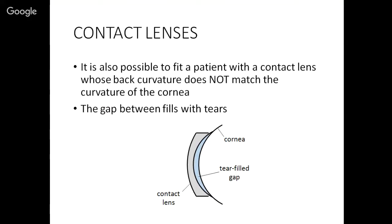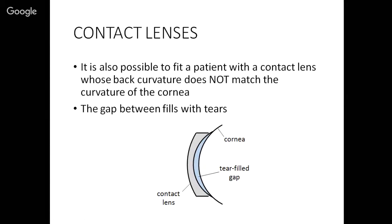However, you don't actually have to fit a contact lens whose back surface matches the surface of the cornea. They can be a little different. Not a lot, but a little different. When that happens, the space in between the contact lens and the cornea actually fills in with the person who's wearing the contact lens's tears. So it's not air between the contact lens and the eye. It's actually the tears.